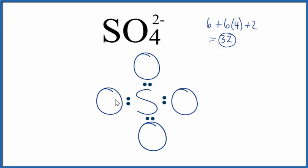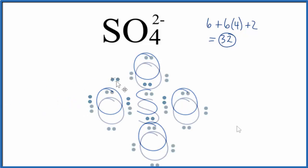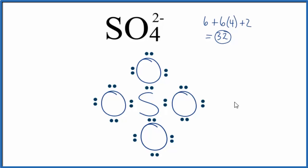So let's complete the octets on each of the oxygen atoms, till we've used 32 valence electrons. So at this point we've used all 32 valence electrons for the SO4 2- Lewis structure.